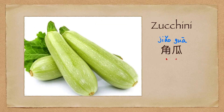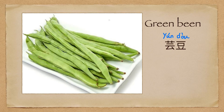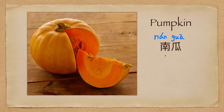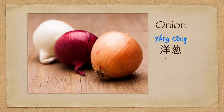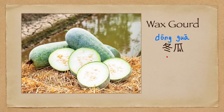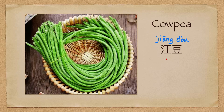角瓜 (zucchini). 云豆 (green beans). 毛豆 (edamame). 南瓜 (pumpkin). 洋葱 (onion). 芥术 (mustard greens). 冬瓜 (winter melon). 姜豆 (long beans).